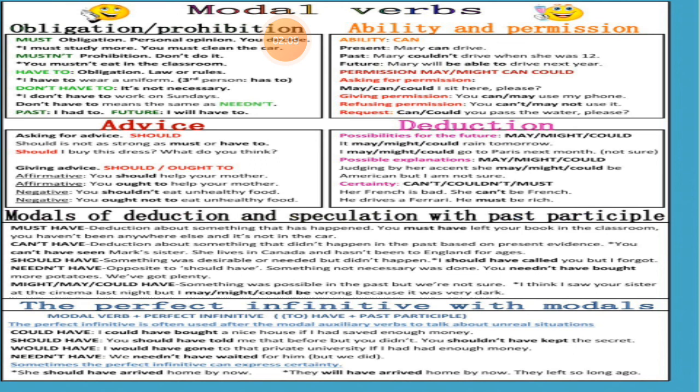Then ability and permission. 'Can' for ability. 'May' for permission. 'Might' and 'could' for permission. Asking for permission: 'may,' 'can,' and 'could.' Then giving permission: 'can' and 'may.' Then refusing permission: 'cannot,' 'may not.' Request: 'could,' 'can,' or 'could.' Then for modal verbs showing advice — these are asking for advice: 'should.'